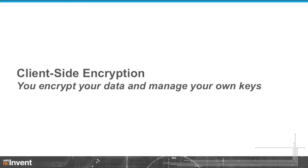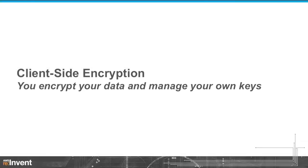So let's shift gears and talk about client-side encryption. In this model, the keys can be located either in your data centers in systems you manage, or they could be up in AWS as well. The encryption happens wherever your client application lives. If this is a client application that you control in your data center, it happens there. If it's a client application running in EC2, it happens there. So you are encrypting the data before you send it to an AWS service for storage, whether that be EBS or S3.